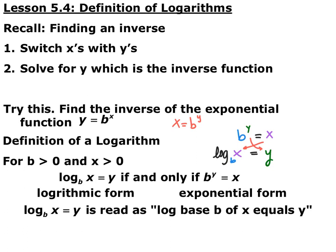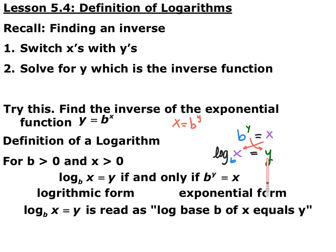When switching between forms, your log base stays the same — whatever the base of your exponential is becomes the base of your logarithm, written as a subscript. Your input and output switch because for inverses, domains and ranges switch. Whatever was originally an output now goes inside the logarithm, and whatever was originally an input or exponent is now outside the logarithm — that's your new output.